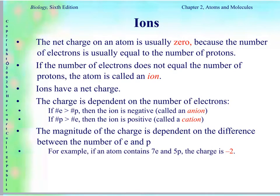Most times an atom will not have a charge — it will have a net charge of zero, because the number of protons equals the number of electrons. However, that doesn't always happen, especially during chemical reactions. If the number of electrons does not equal the number of protons, we call that atom an ion. Ions will have a charge. If the ion is negative, like Cl minus one, it's called an anion. If the ion is positive, like magnesium two plus, that ion is called a cation.